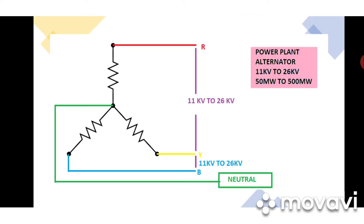Now let's see how electricity reaches your home. This is a simple diagram of a power plant alternator — a generator — where you can see there are three windings marked R, Y, B. When rotating, electricity is produced. From the center tapping, the neutral is taken. These generators produce high voltage, like 11 kV to 26 kV or more, according to the design of the power plant.